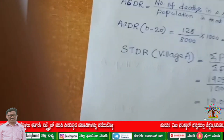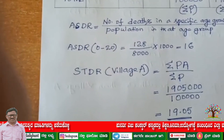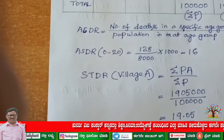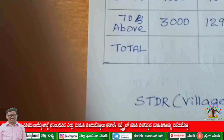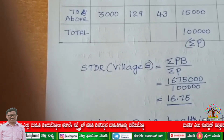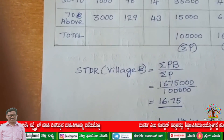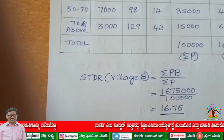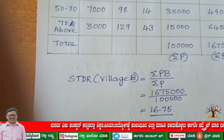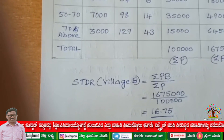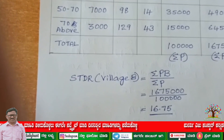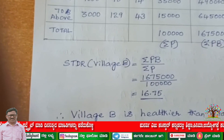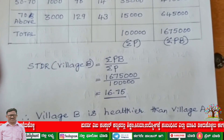Now look at STDR for village A and village B. STDR village A is 19.05 — that is the standardized death rate for village A. Standardized death rate for village B is 16.75. The standardized death rates are less in village B. Wherever the STDR is less, that village is considered healthier. So the conclusion you write is: village B is healthier than village A.